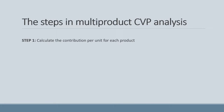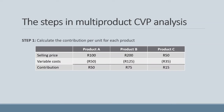Our first step was to calculate the contribution per unit for each product. Remember, contribution is our selling price less all variable costs. This is easy in this example, as the scenario tells us the selling price and variable costs for each product. We get a contribution of 50 Rand for product A, 75 Rand for product B, and 15 Rand for product C.